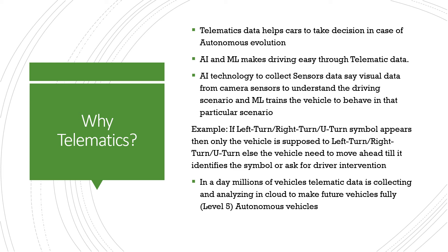How does telematics data help in autonomous evolution? The evolution of autonomous vehicles happens through AI and machine learning. Coding each and every scenario requires thousands of lines of code and still does not satisfy the requirements of autonomous vehicles. That's why the combination of artificial intelligence and machine learning makes the car learn on its own, enabling it to take decisions on its own — like a mini-robot. This AI and ML combination makes driving much easier with the help of telematic data.